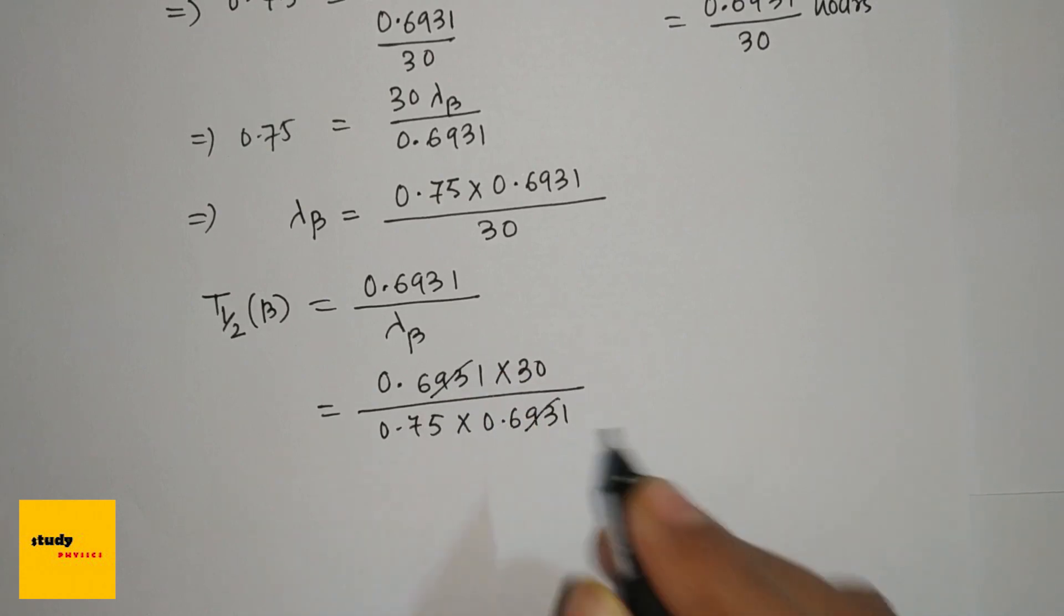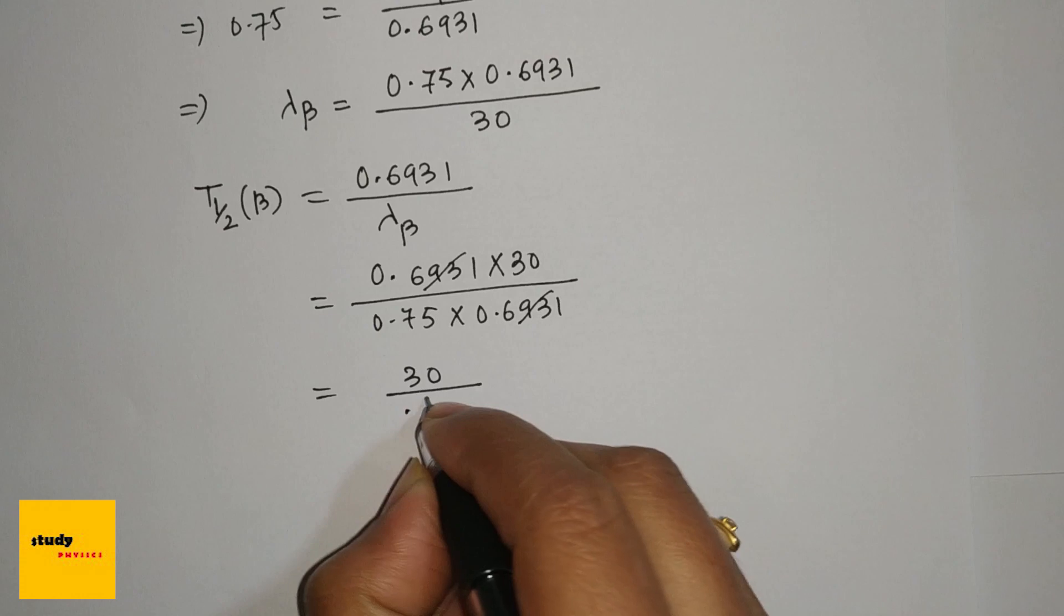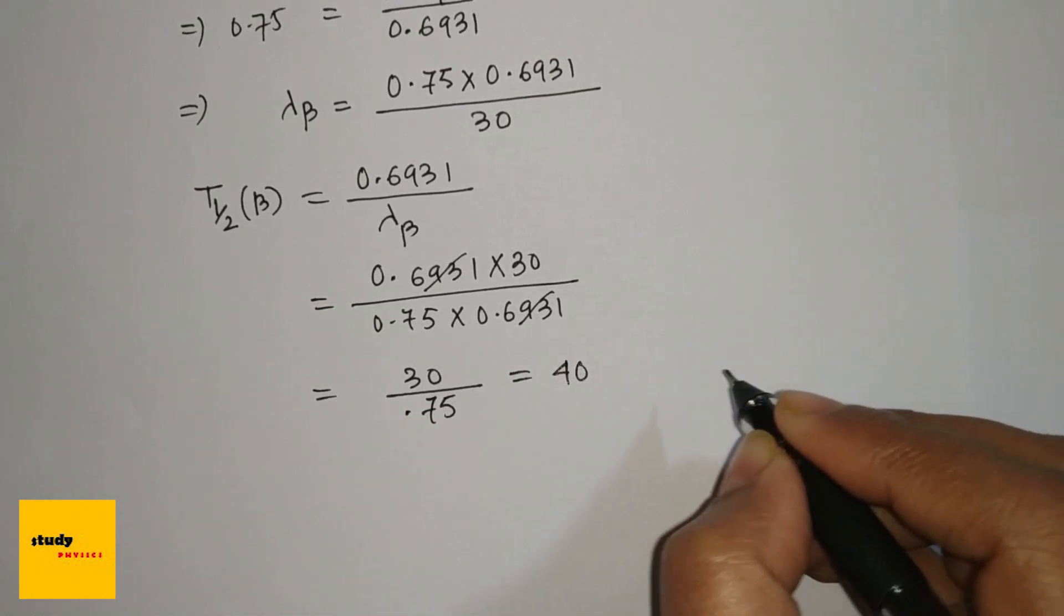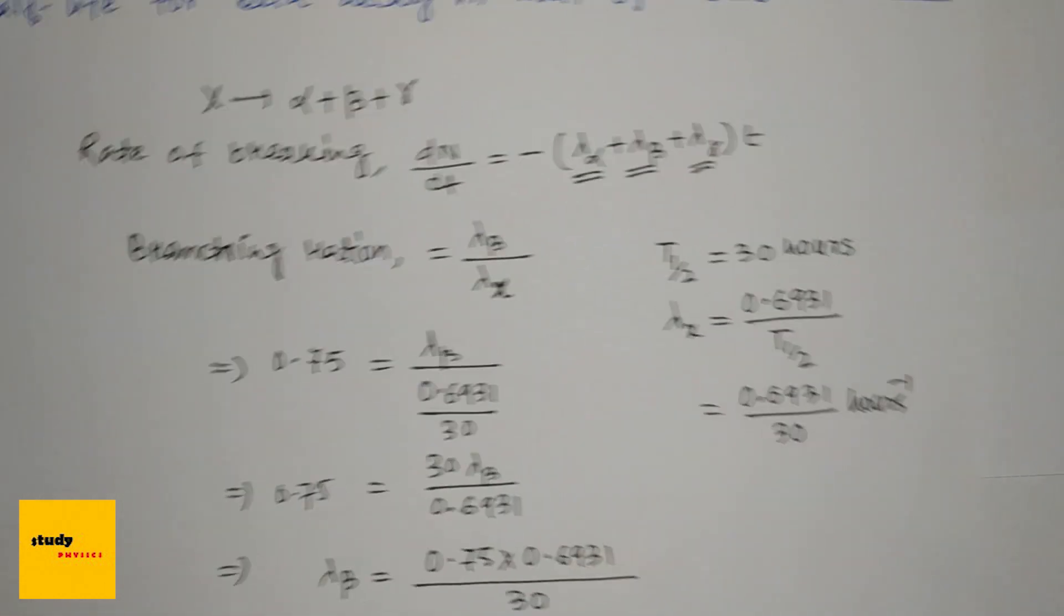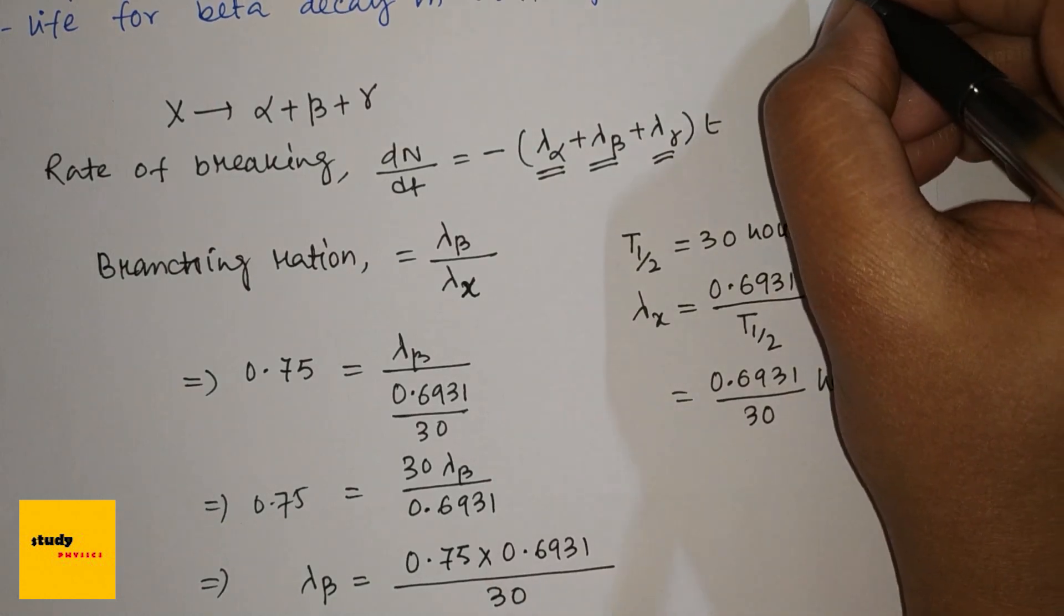This will cancel out, so we get 30 divided by 0.75, which equals 40 hours. So the half-life of beta decay in units of hours is 40.